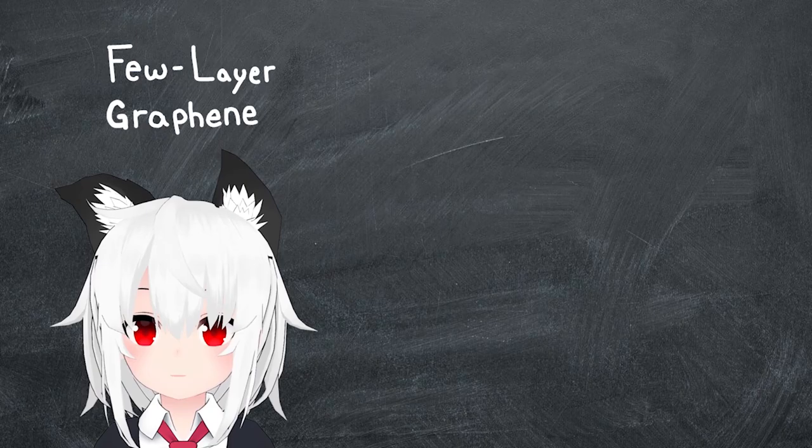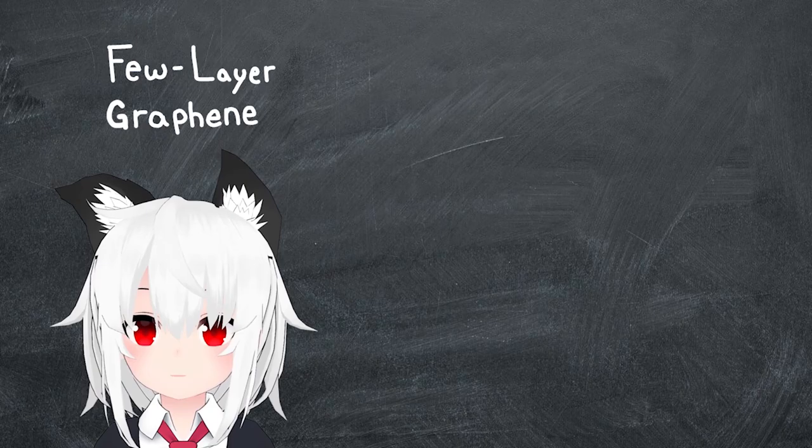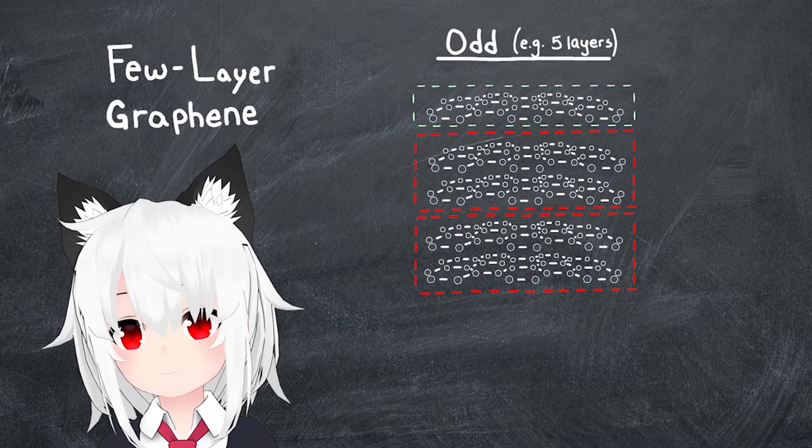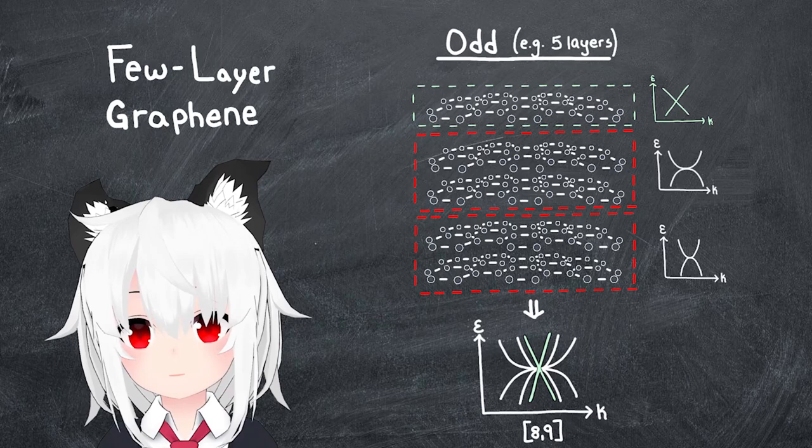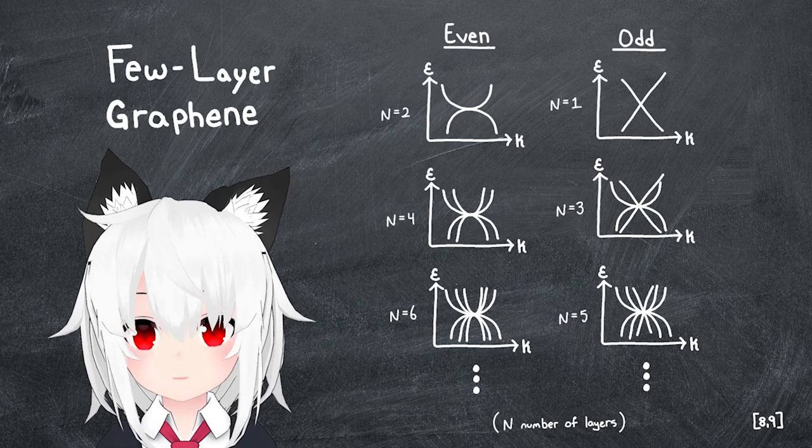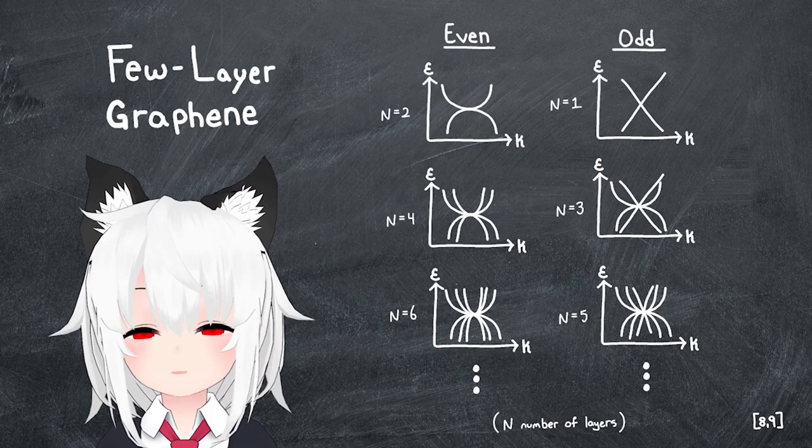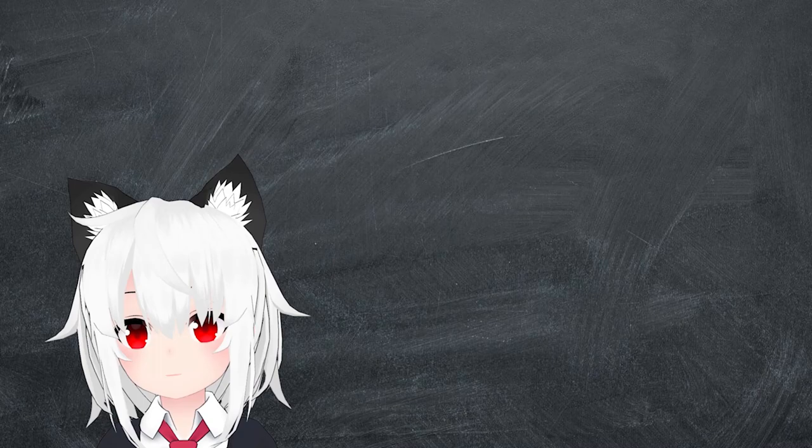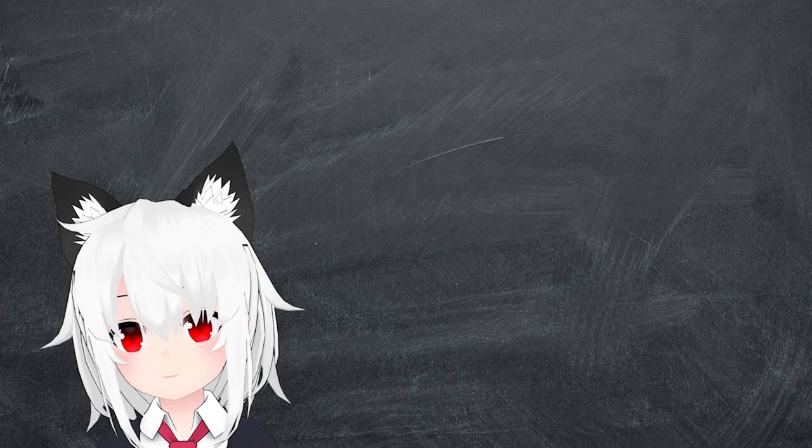If the number of layers is odd, then the same picture actually still applies, except that now we have one additional monolayer subsystem that needs to be accounted for. In the context of the band structure, this really just means that all we need to do is to append one additional linearly dispersing monolayer cone on top of all the other quadratically dispersing ones. The result is a pretty quick and easy way of drawing out the band structure for a few layer graphene that really only depends on the evenness or oddness of the number of layers involved. Pretty cool. But if this is true then, it would seem like graphene is always an electrical conductor, no matter the number of layers involved, since there is never the development of a gap at any point in the spectrum.